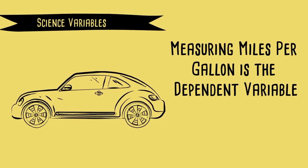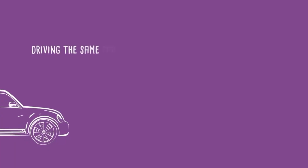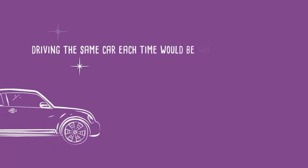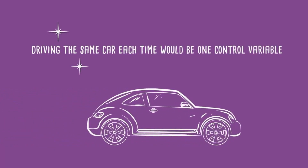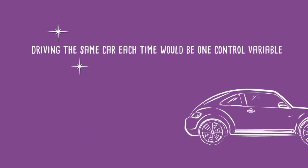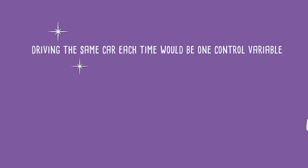Measuring the miles per gallon is the dependent variable — it's what I'm measuring. And driving the same car each time would be one control variable. This will help keep the results constant.